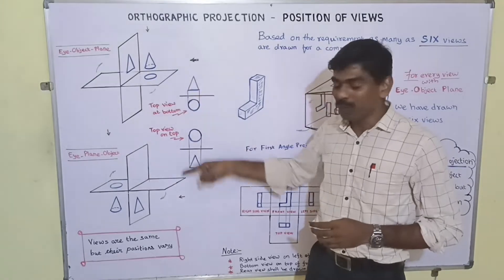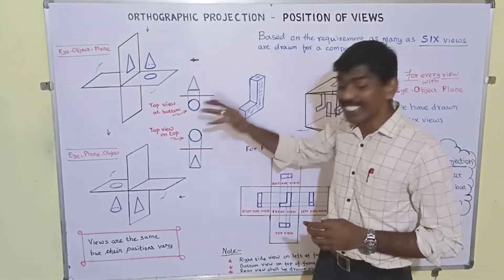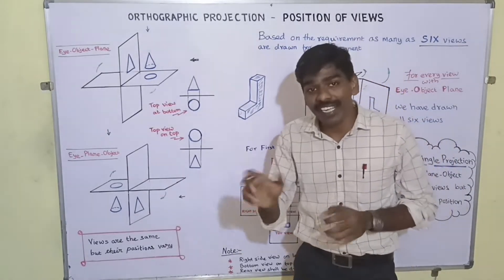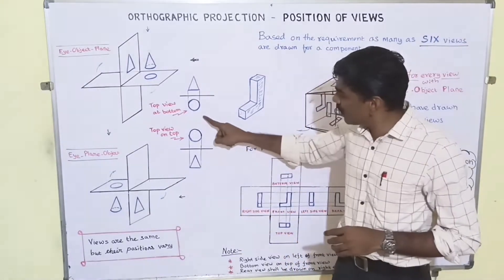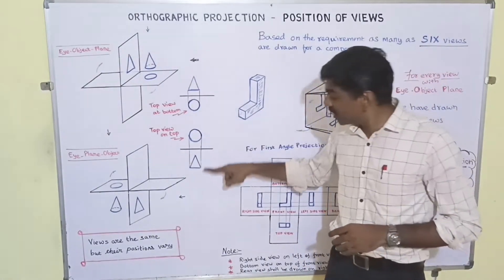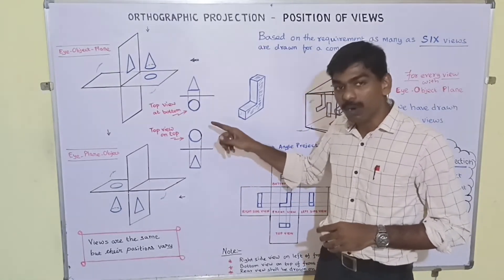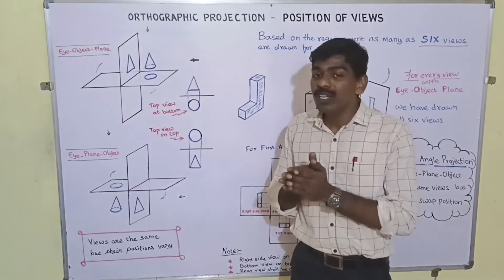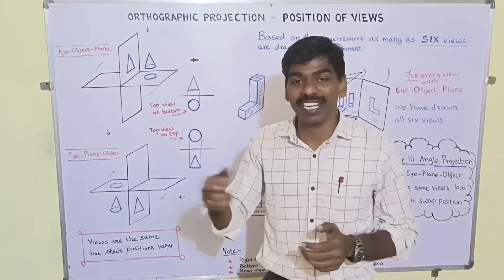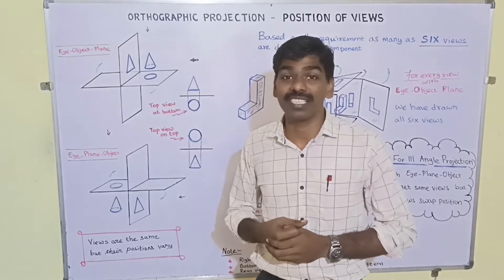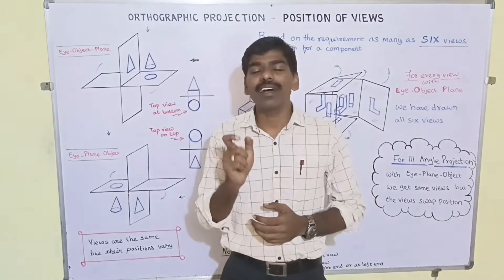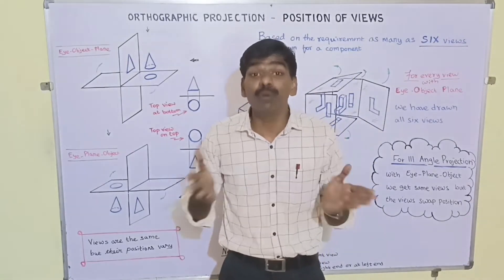Considering both cases, the front views are the same and the top views are the same, but their positioning is different. In first angle projection the top view of the object is obtained at the bottom, whereas in third angle projection the top view is obtained on the top. This is how the positioning of views varies for first angle projection and also for third angle projection.